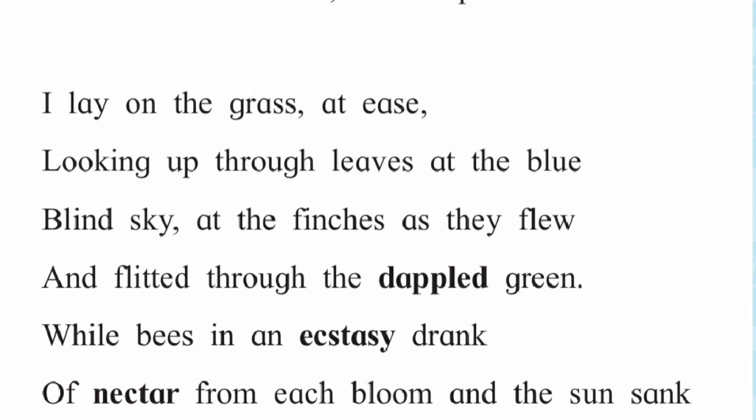I lie on the grass at ease, looking up through leaves at the blue blind sky, at the finches as they flew and flitted through the dappled green. The poet talks about the present situation of the cherry tree. The poet is lying on the grass under the tree, looking up at the evening sky. Small singing birds — finches — were flying quickly through the dappled green leaves, and the poet was watching all these things.